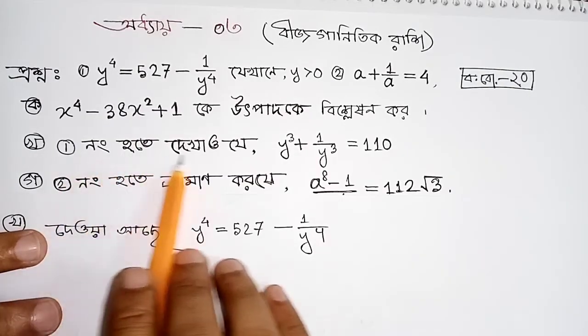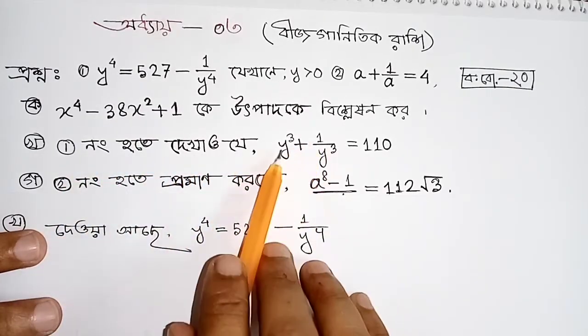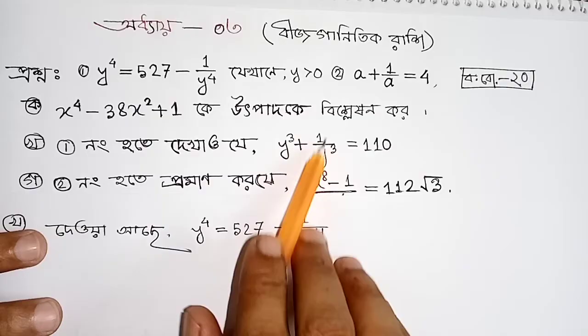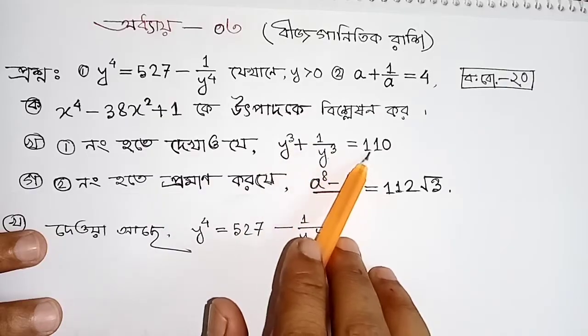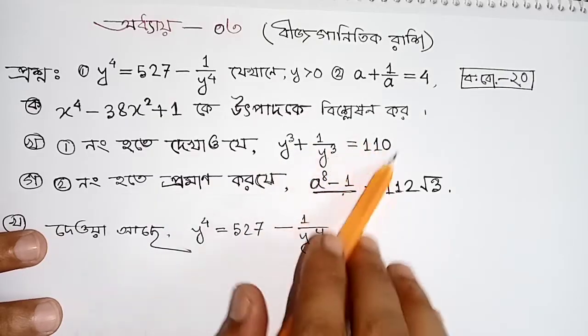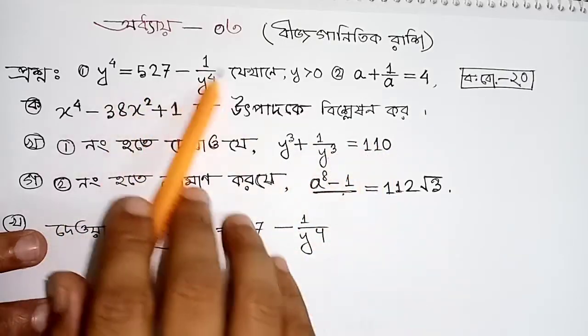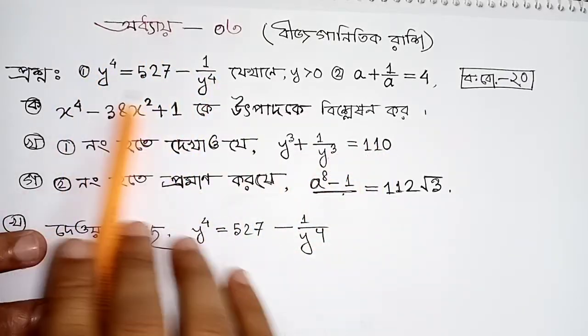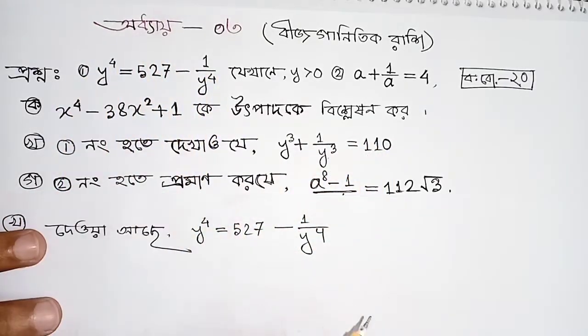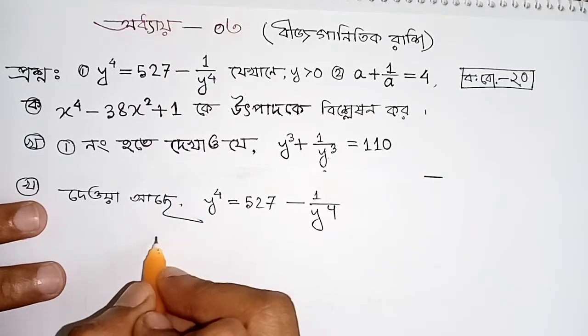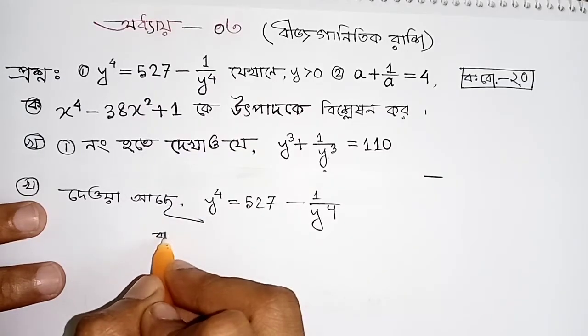The answer is 1 by y cube equals 1, 0. So this is the first problem we have to solve. Let's do the solution.